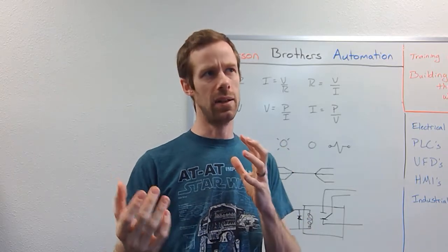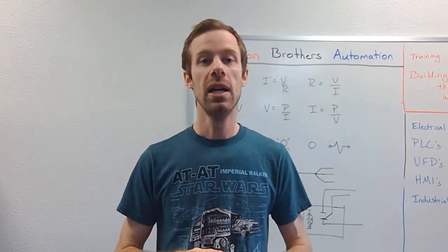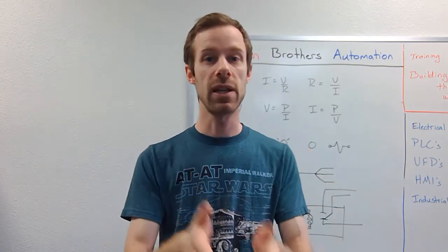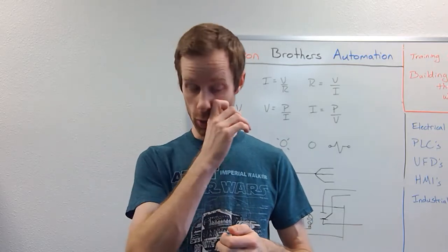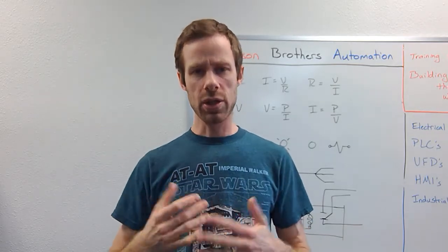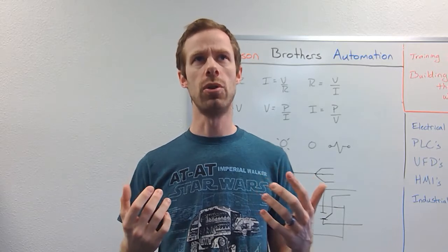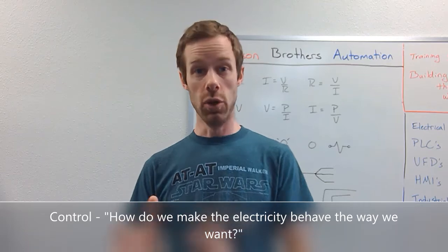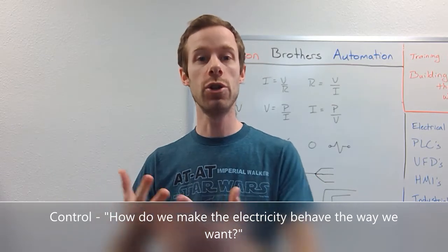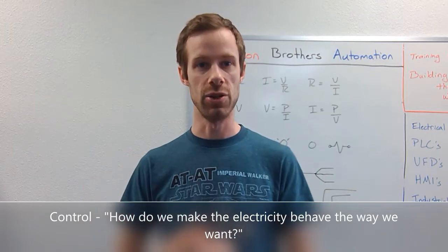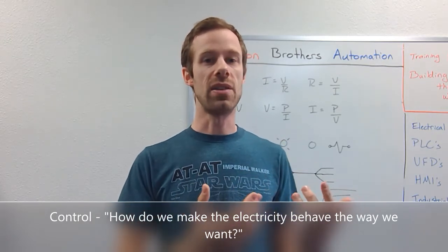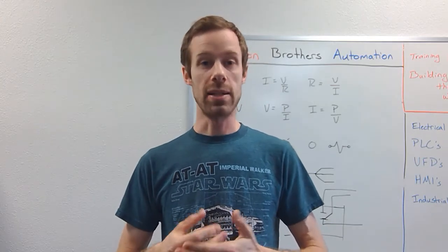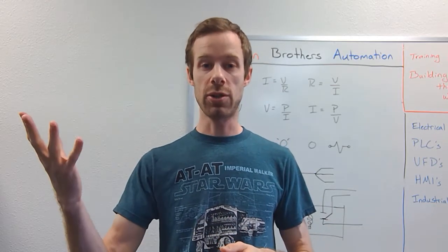We'll start with the most basic, rudimentary control devices and then move on to talk a little about the more complicated ones. After this, we'll be able to dive into specific types of control devices. So what does control mean? Control can be summed up as: how do we make the electricity behave the way we want? The load device is responsible for the conversion of energy — making something useful happen — but the control devices make the energy behave the way we want.